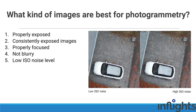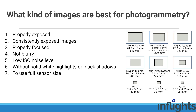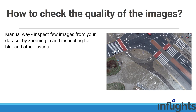Keep ISO noise levels low. Native ISO, usually around 100, produces the lowest amount of noise. Avoid solid white highlights or black shadows — adjust all parameters to avoid underexposed or overexposed areas. Use the full sensor size and full aspect ratio of your sensor. Shoot within the aperture sweet spot for adequate depth of field and sharpness.